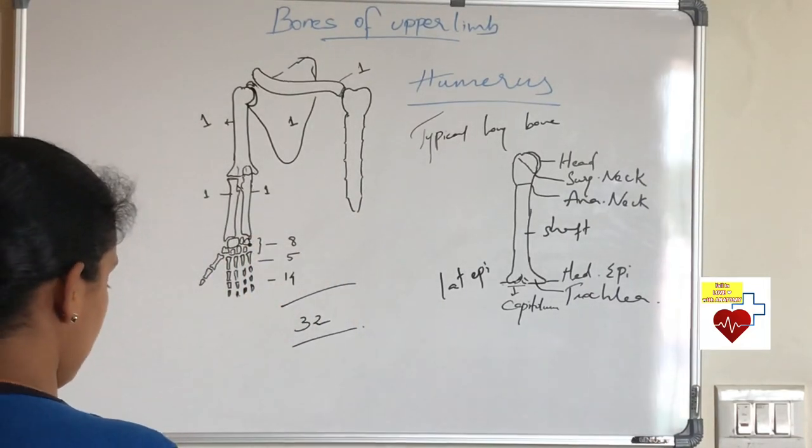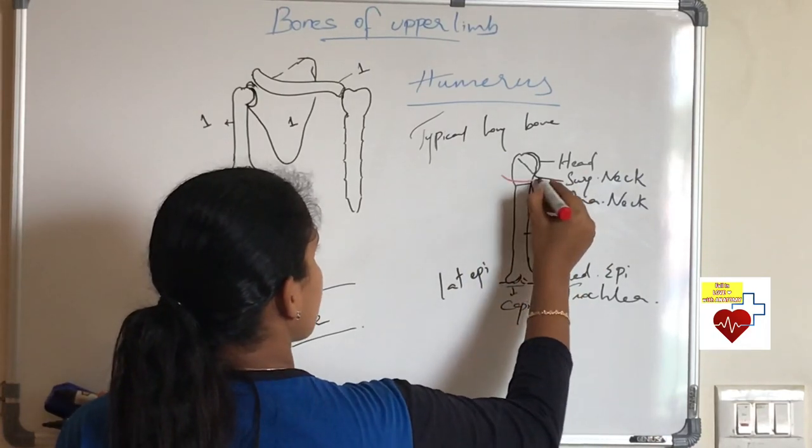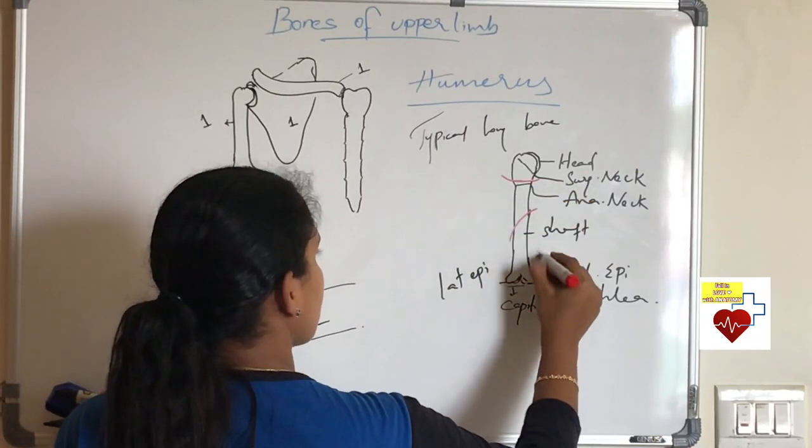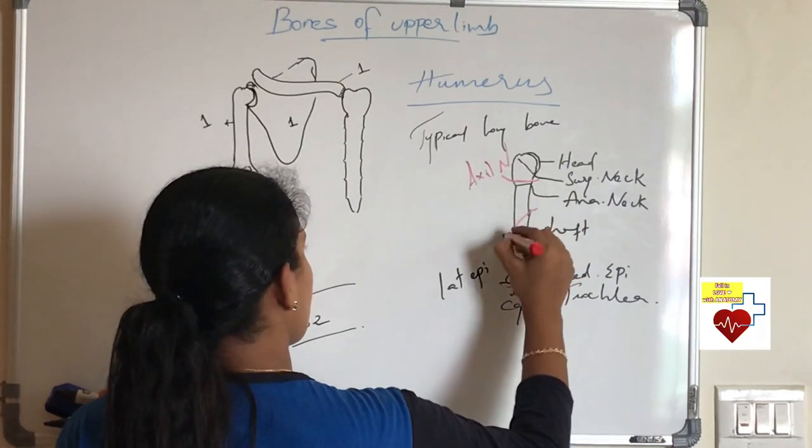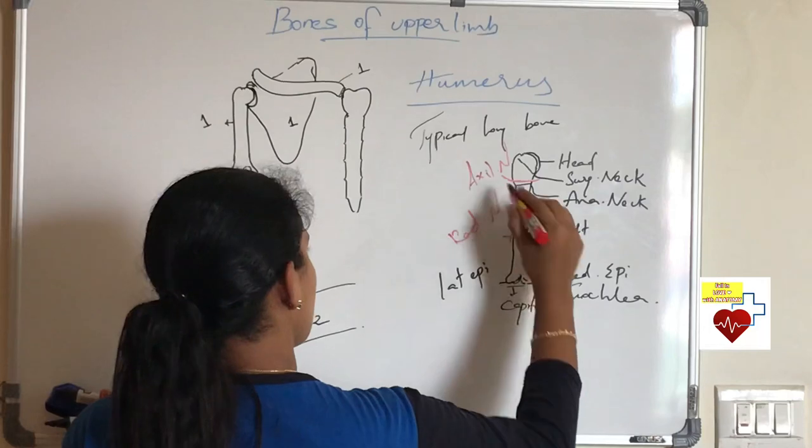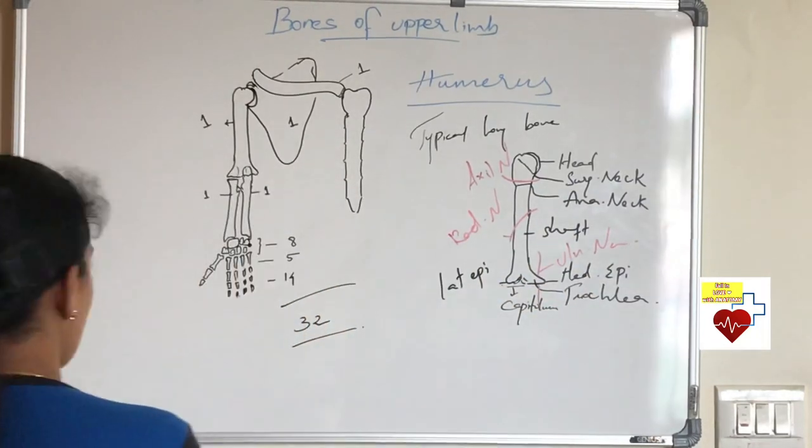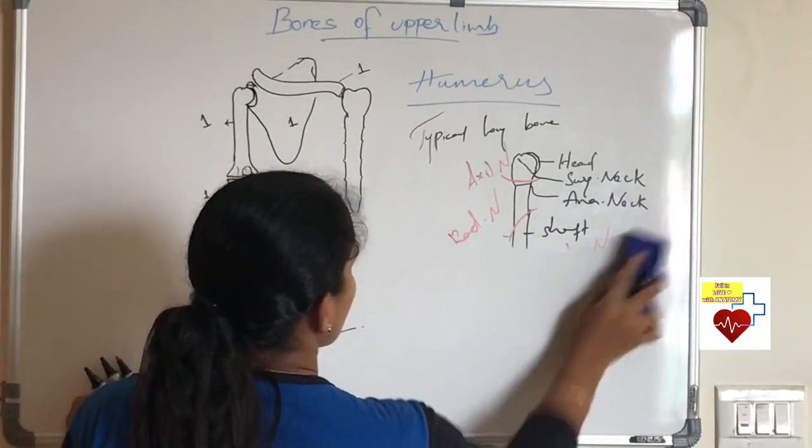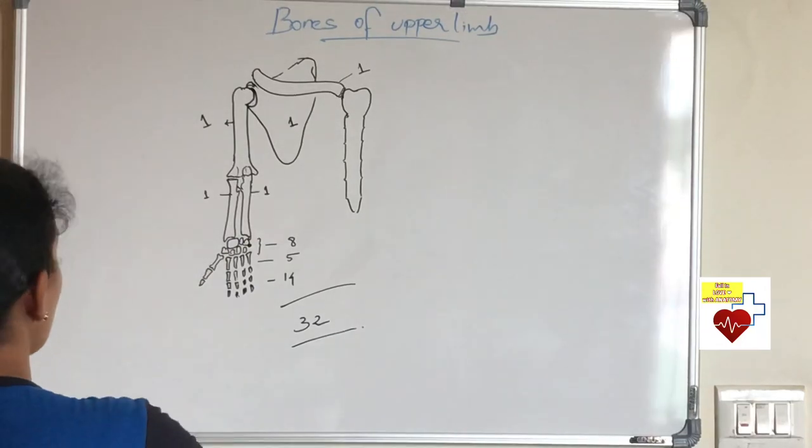Now just know what are the nerves related to the bones of humerus. The nerves related are axillary nerve which winds around the neck of humerus, radial nerve in spiral groove in the shaft of humerus, ulnar nerve behind the medial epicondyle. Because of this ulnar nerve we call humerus as funny bone.